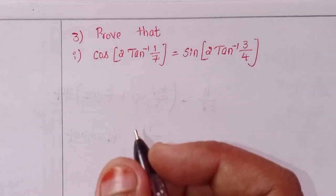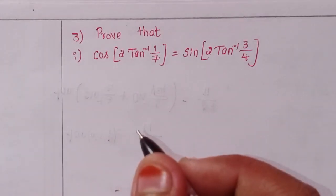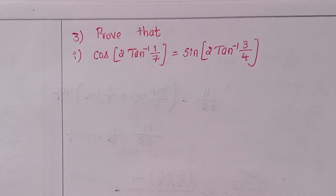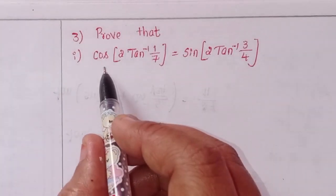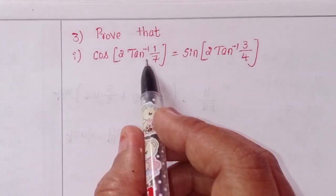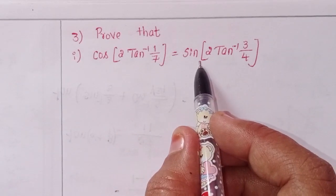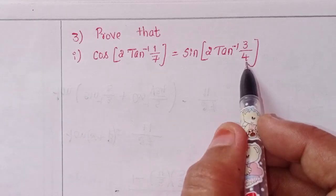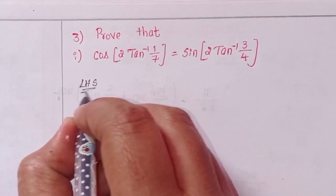Hi viewers, welcome to my channel. Today we'll discuss Intermediate First Year 1A, Chapter 8, Inverse Trigonometric Functions, Exercise 8a, second problem. Prove that cos of 2 times tan inverse 1 by 7 equals sin of 2 times tan inverse 3 by 4.